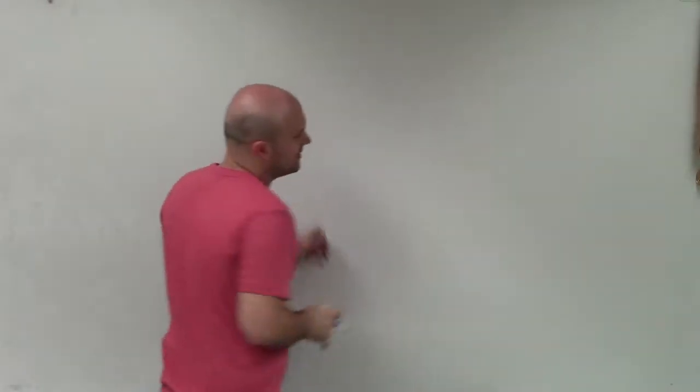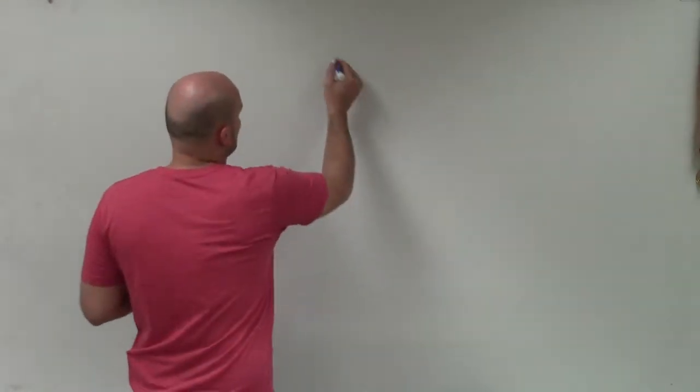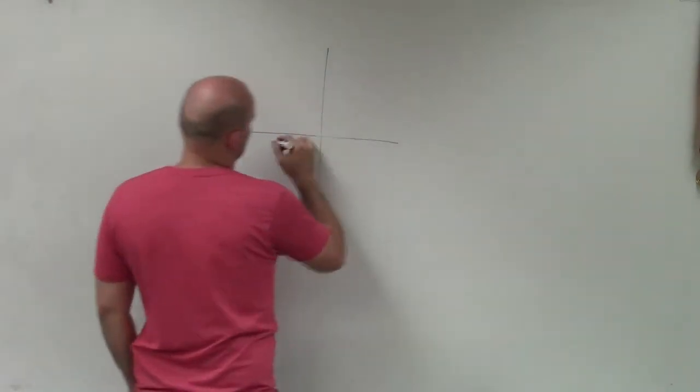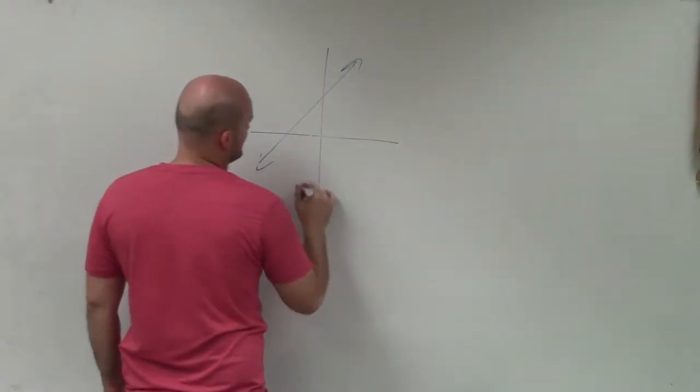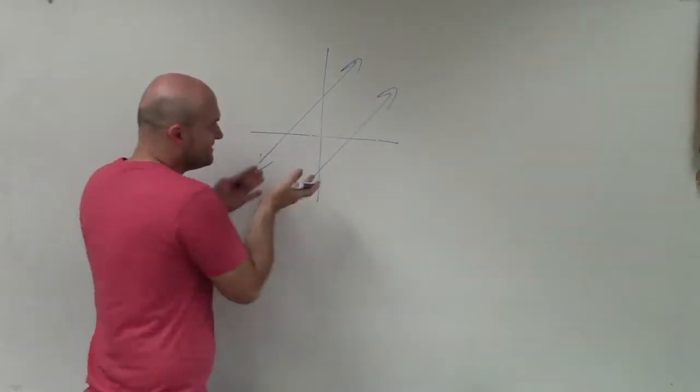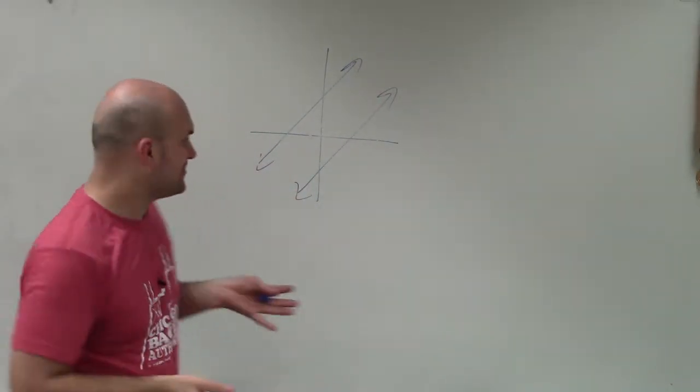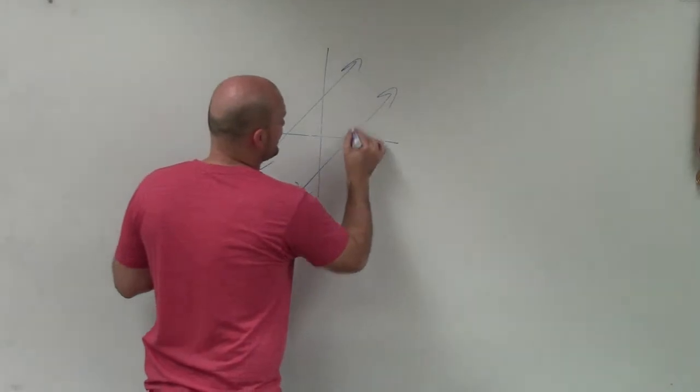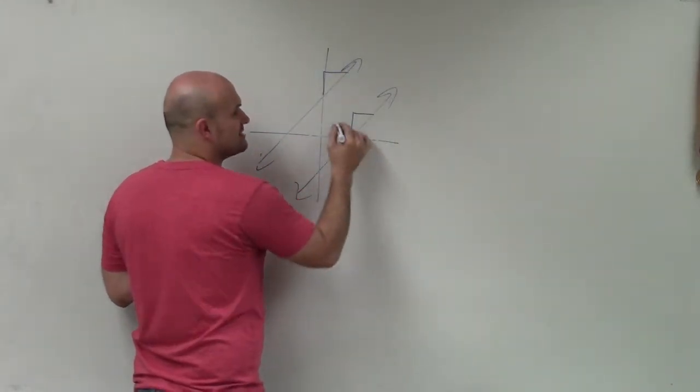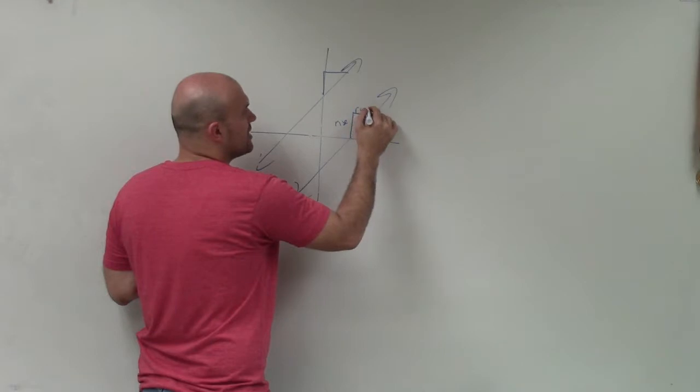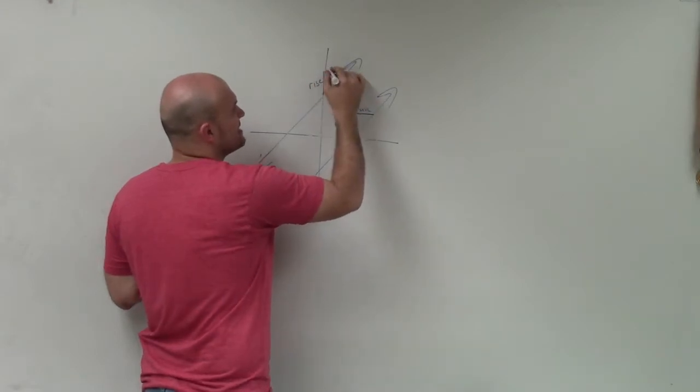So first of all, when we were in Algebra 1 and Algebra 2, one of the important things we talked about was parallel lines. And when we were graphing parallel lines, one thing that we noticed was that the parallel lines never touched, right? And the reason why they never touched was because their slope was exactly the same. The rise over the run was exactly the same.